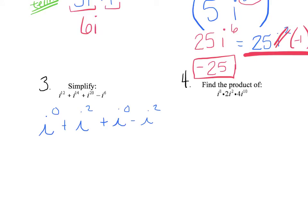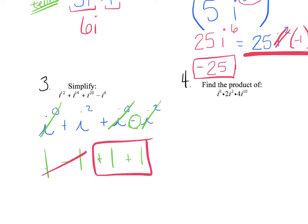For the next practice problem, divide each exponent by 4 and use the remainder. i to the 0 is 1, and i squared is negative 1. For the term with an existing negative sign, i squared becomes negative 1 but there's already a negative, making it positive 1. So I have 1 minus 1, which is zero, plus 1 plus 1, which is 2, for a total of 2.